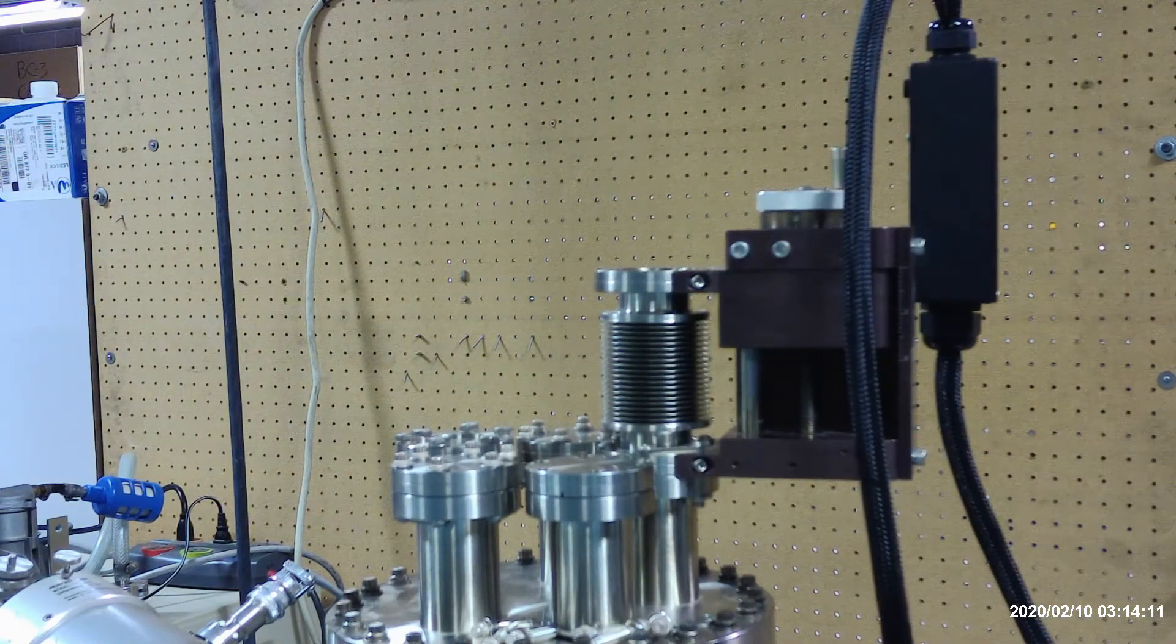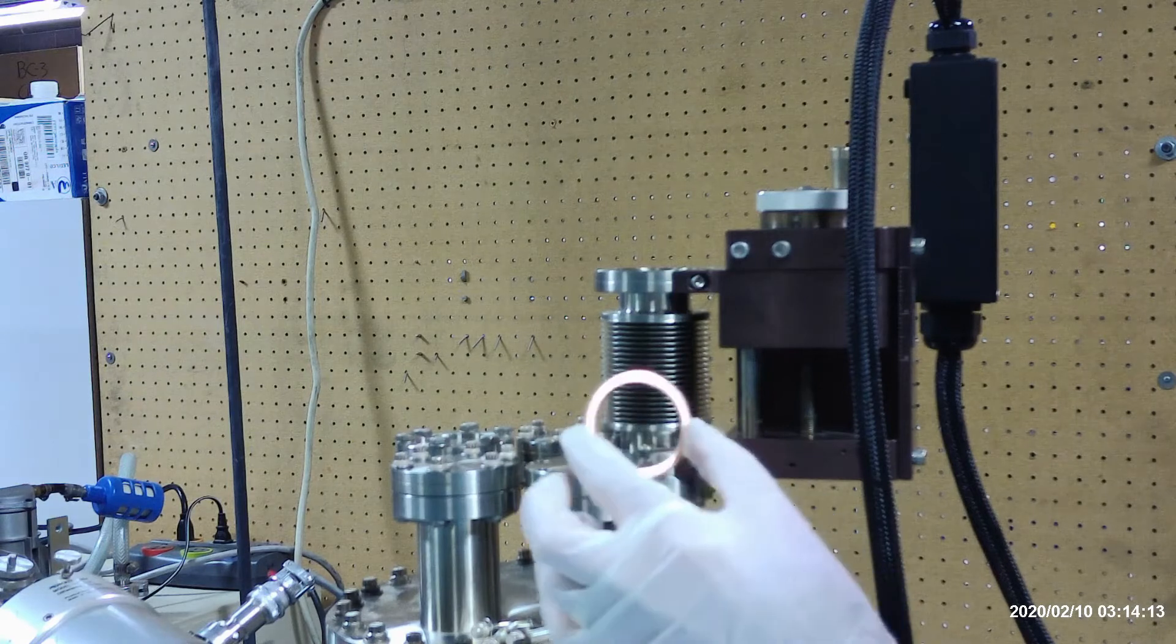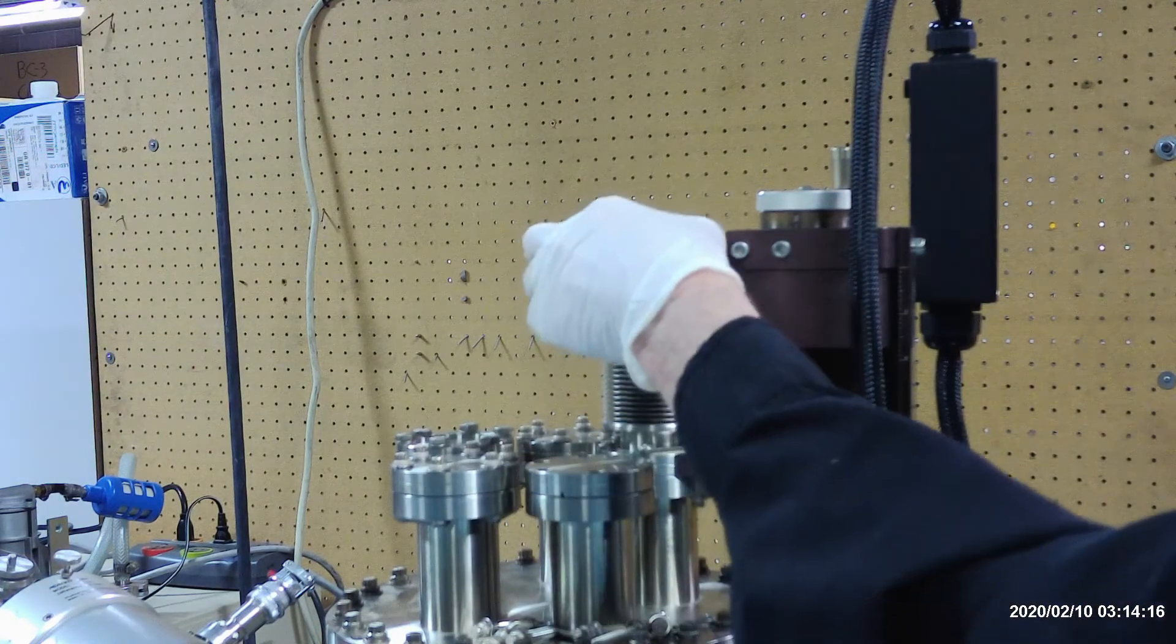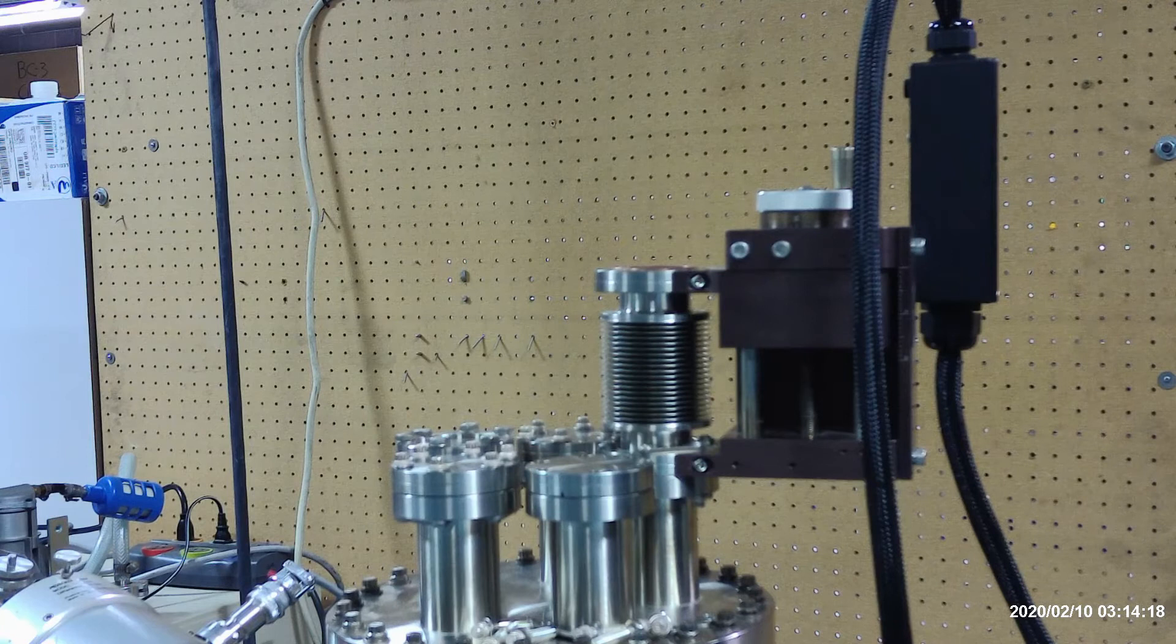We will get a gasket ready, a large ID, 2.75 OD flange gasket. It's got 1.52 inch ID for more clearance.